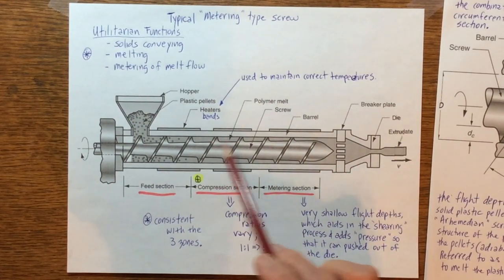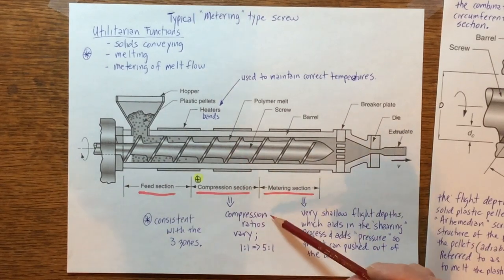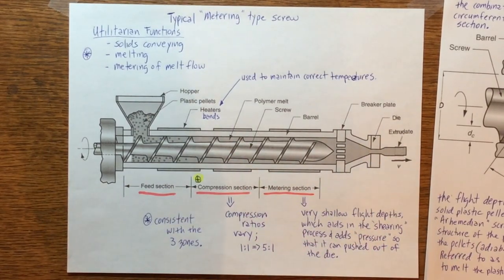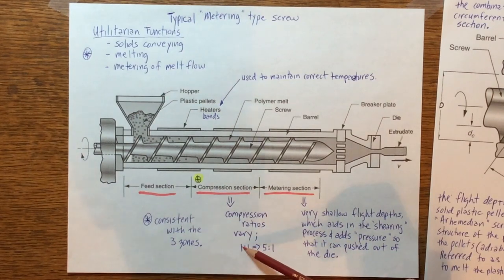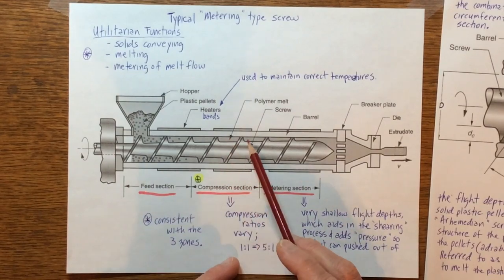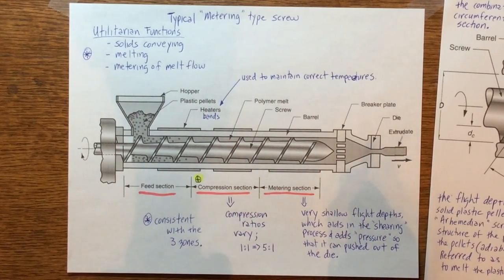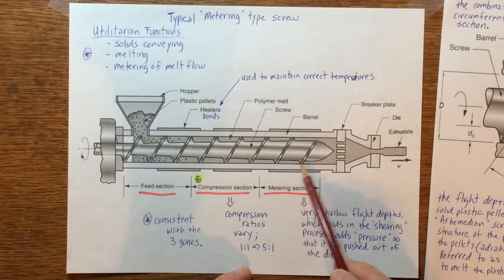Then it enters into the compression section. The compression section is where most of the shearing takes place, and the compression ratios can vary depending upon the polymer, anywhere from a one-to-one to a five-to-one compression ratio, building building building up here inside this volumetric area or zone.